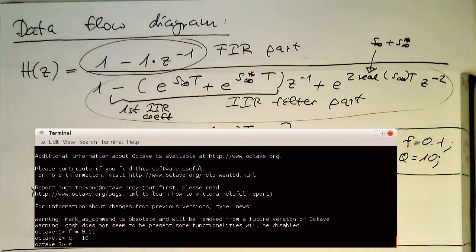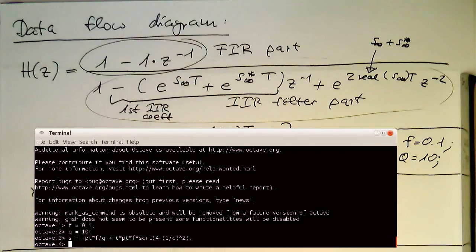Now let's define our S. When my S was this quite involved formula here, let's quickly type this in again. Let's hope I don't make any mistake here. F and then square root of 4 minus 1 over Q and then this to the power of 2. Okay.